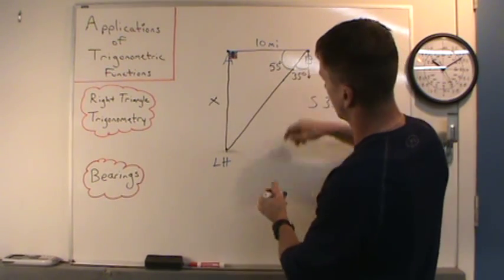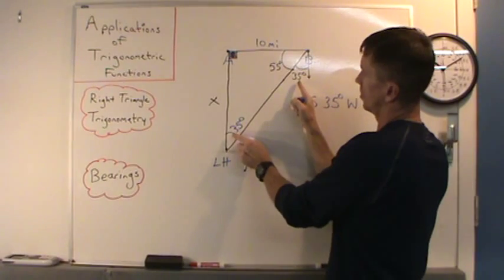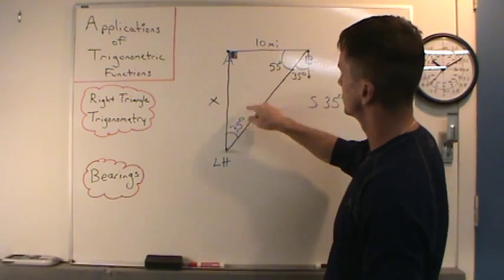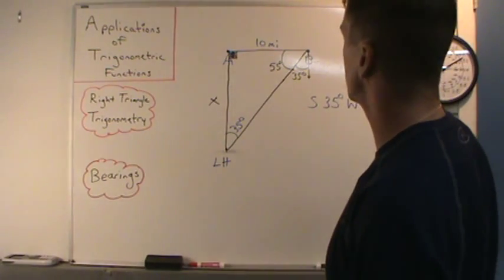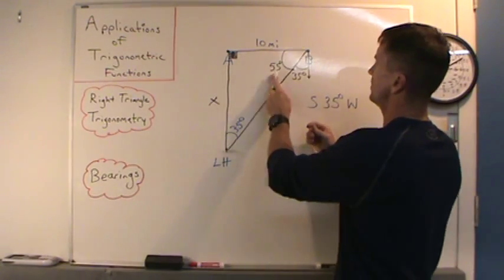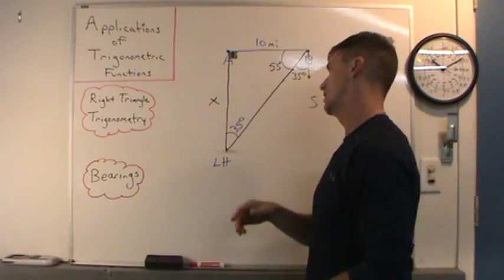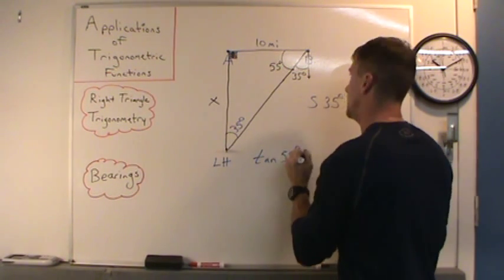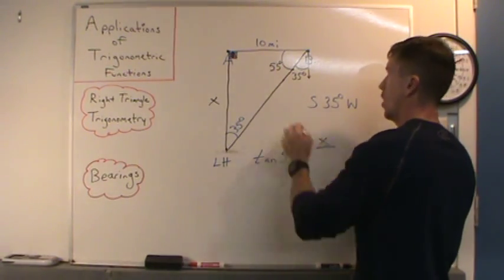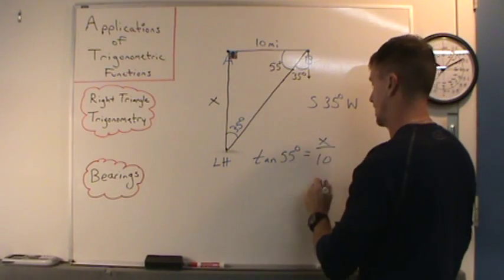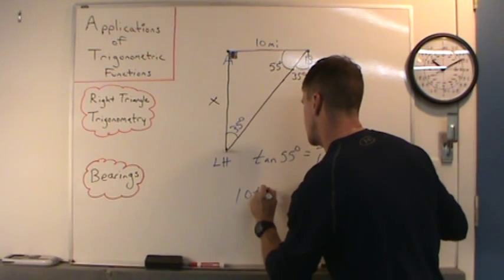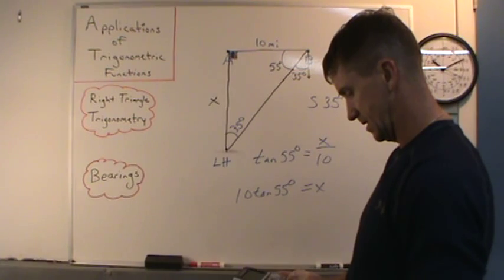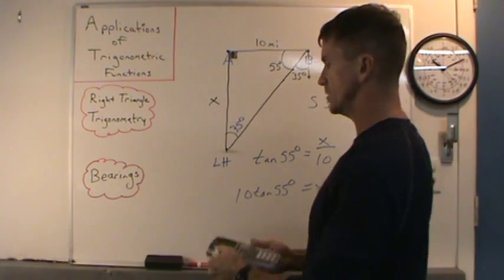If this is 35, that means this angle over here is also 35, because these are called alternate interior angles, and alternate interior angles are congruent. We can use the 55 degrees or the 35 degrees — let's use 55. If I use 55 degrees, x is opposite and 10 is adjacent. Opposite and adjacent — tangent. So tangent of 55 degrees equals x over 10. Multiply 10 on both sides: x equals 10 tangent of 55 degrees. Make sure you're in degree mode. That comes out to be about 14.3 miles.